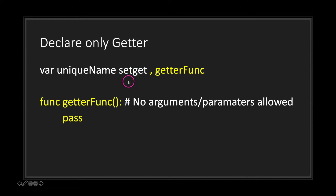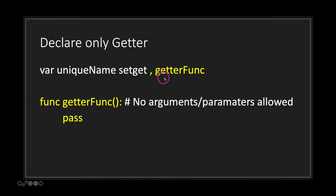You also have the choice of only setting a getter for your variable. To do that, simply use the setget keyword — and this is important — notice we have a comma. The comma is important. Without the comma we're saying that this is our setter function, but when we use the comma what we're saying is that we want to declare a getter function for our variable. Your getter function must be declared in the class and you are not allowed to pass in any arguments or parameters.